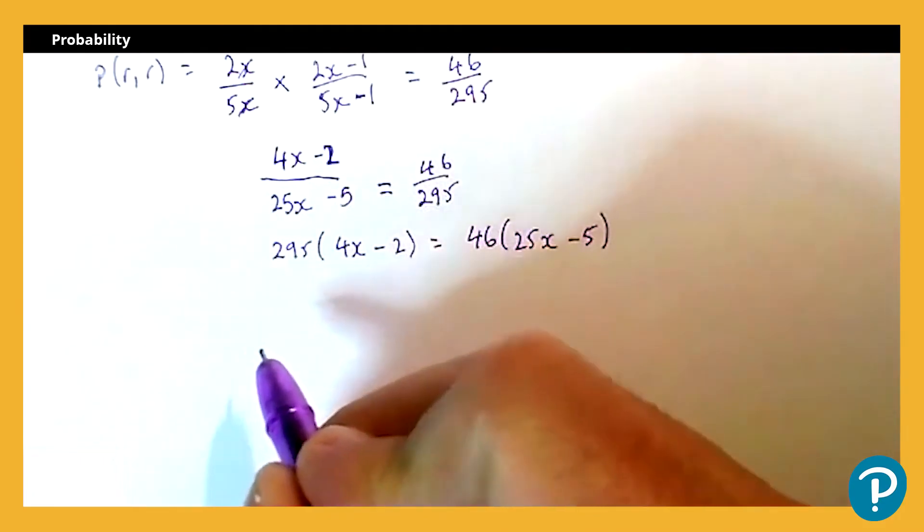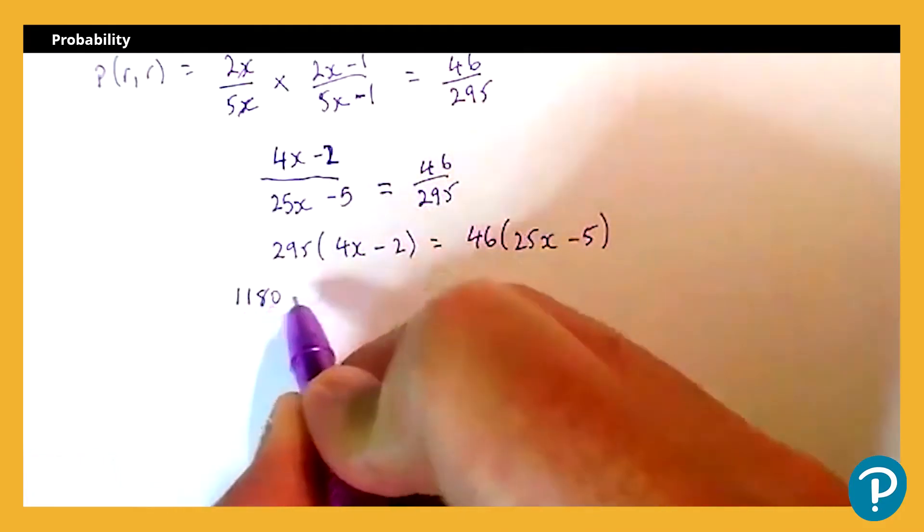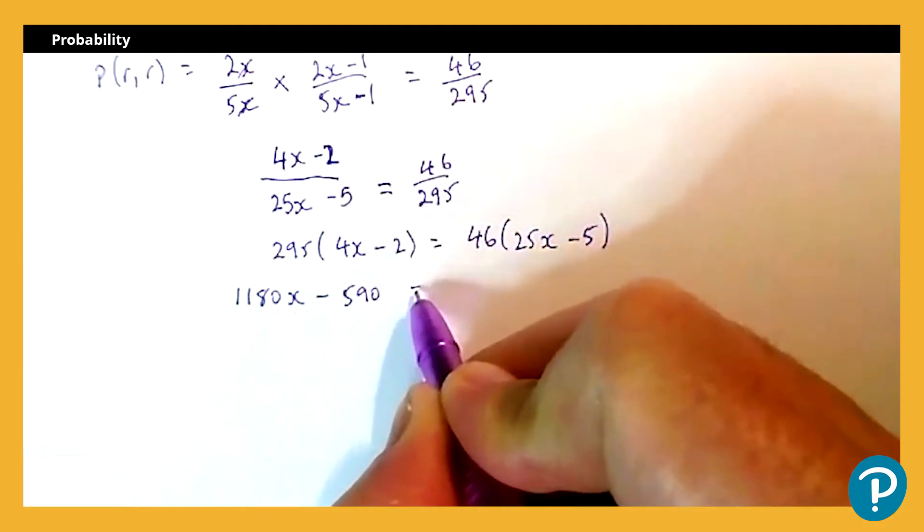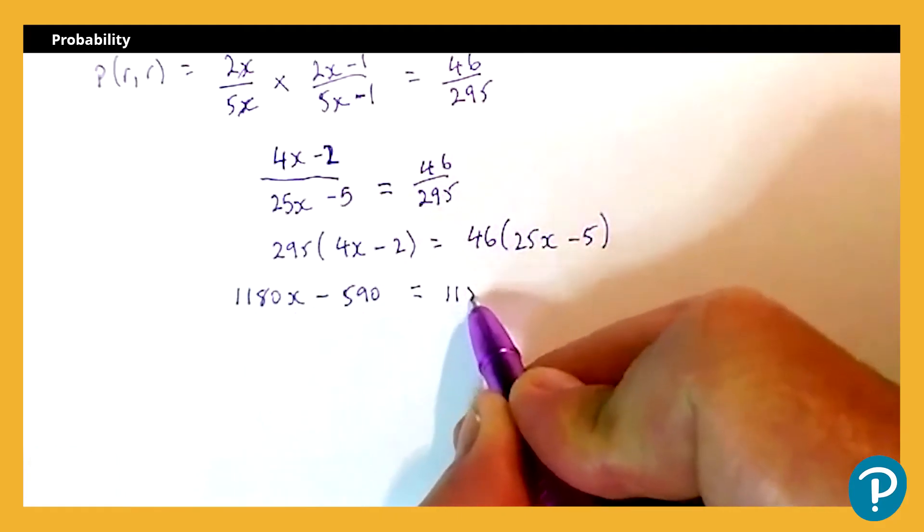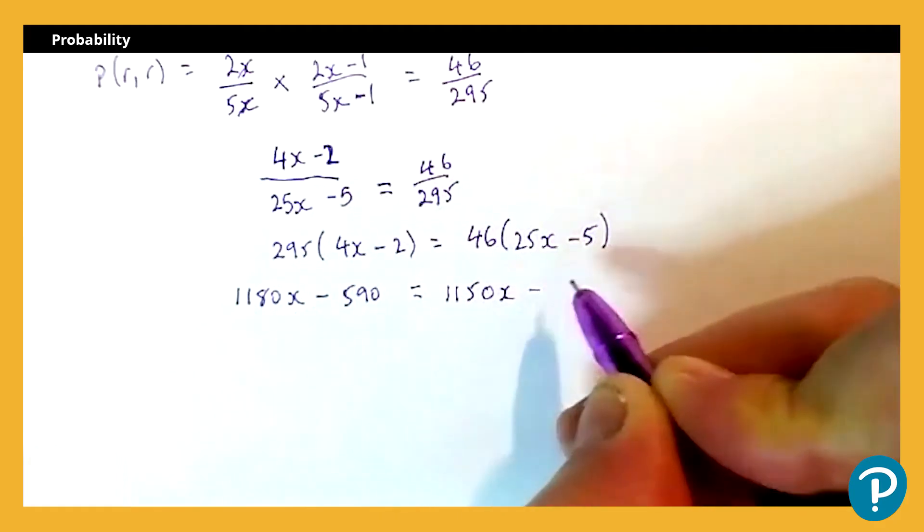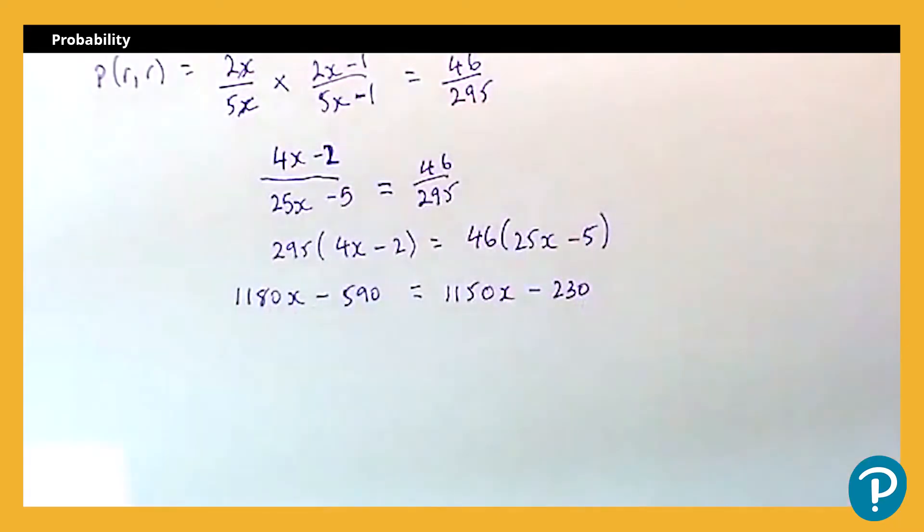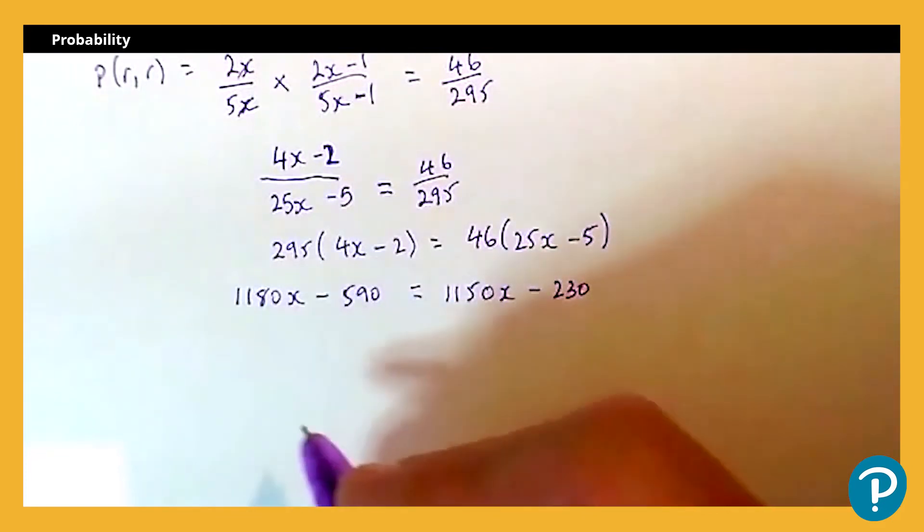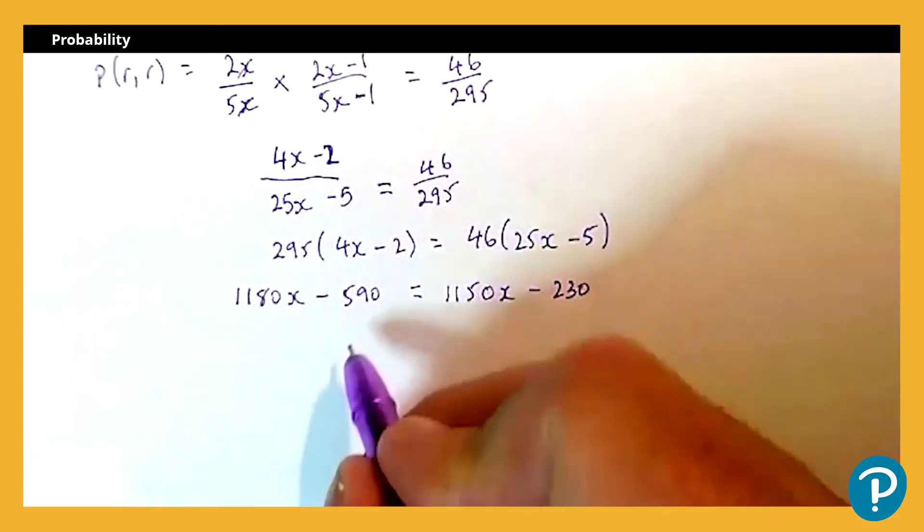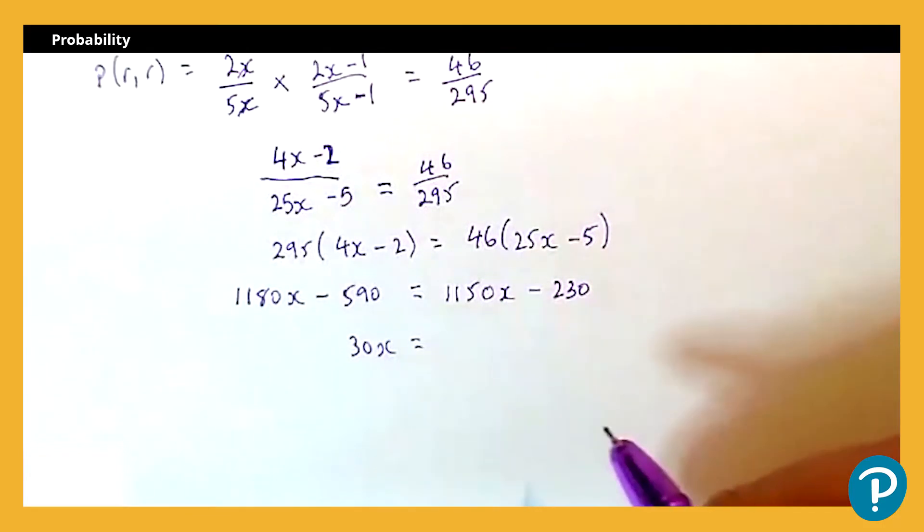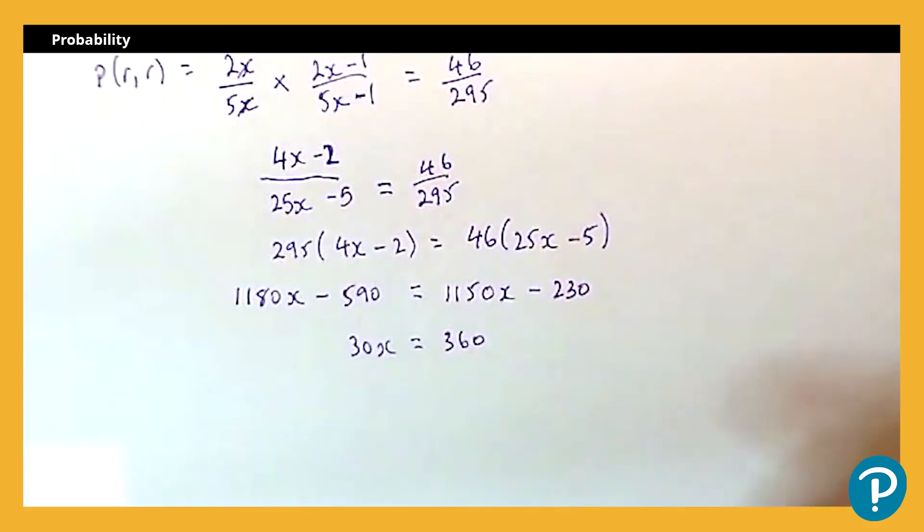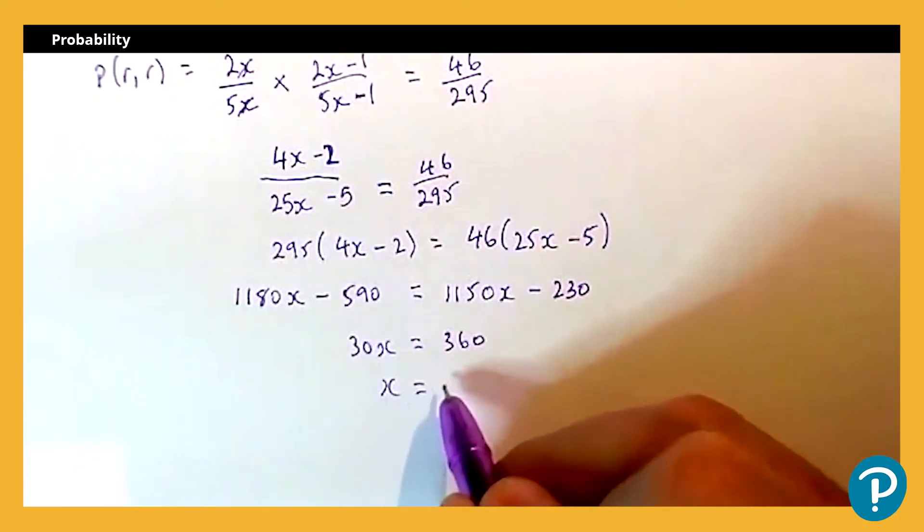Now, looking to expand my brackets, I'm going to get 1180x minus 590, and that's going to be equal to 1150x minus 230. Okay, so going to take the 1150x from both sides and I'm going to add the 590, so that's going to leave me with 30x is equal to 360. Divide through by 30, x is equal to 12.